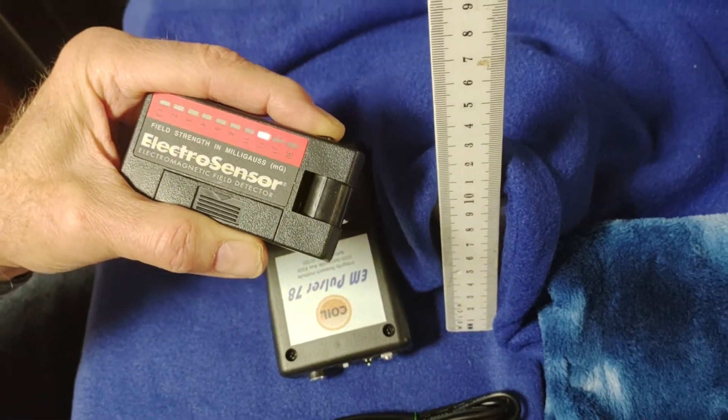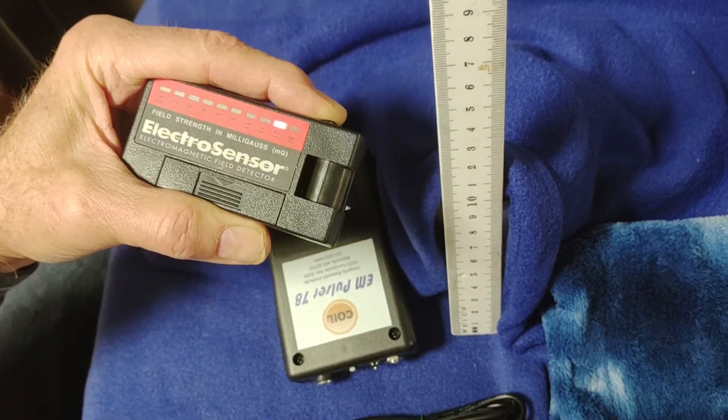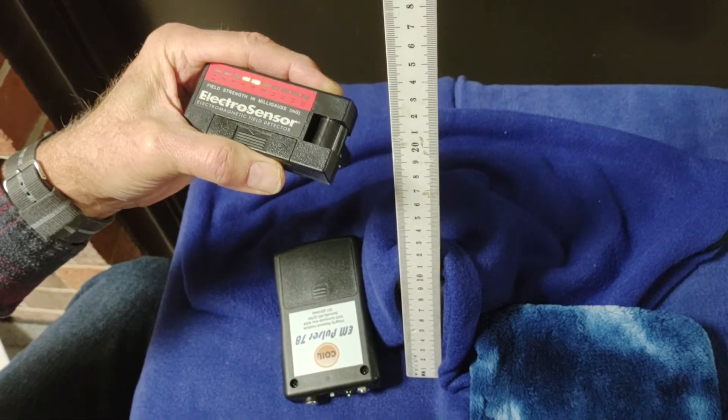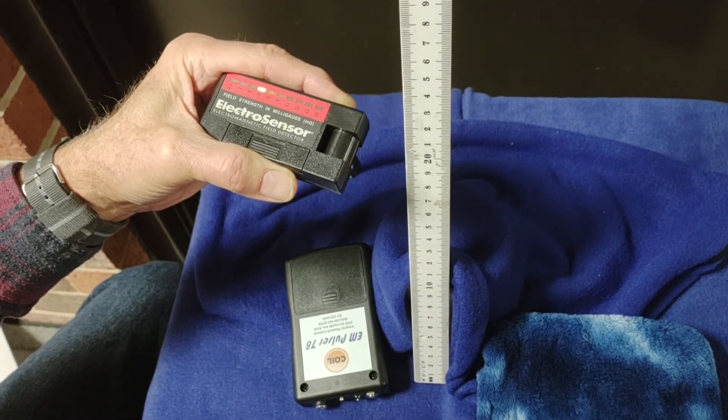So at 10 centimeters, we're measuring about 30 milligauss. I'm going up another 10 to about 20, and this is about 10 milligauss output at 20 centimeters away.